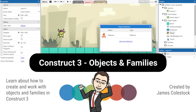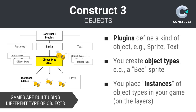In this video, we're going to discuss how to create and work with objects and families in Construct 3. Objects are the items that make up and do most of the work in your games. The Construct 3 game engine has predefined plugins for each type of object you may include. For example, the Sprite plugin allows you to include digital graphics within your games, which can appear on screen and be manipulated programmatically. The typical game in Construct 3 consists primarily of Sprite object types.